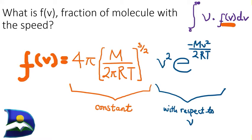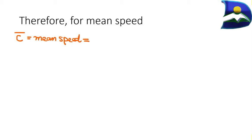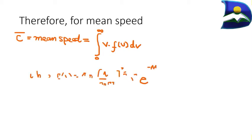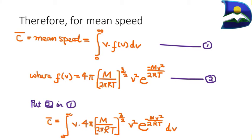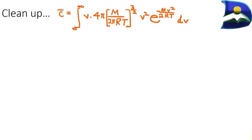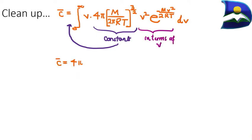Using this expression for f(v) in the mean speed integral, we incorporate it from zero to infinity, substituting the f(v) expression — equation two — into the mean speed integral — equation one. This gives us a long, complicated integral expression. We then clean it up by moving all constants to the front of the integration sign, keeping only the velocity-dependent terms inside.